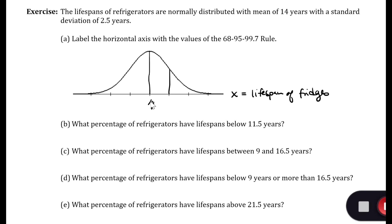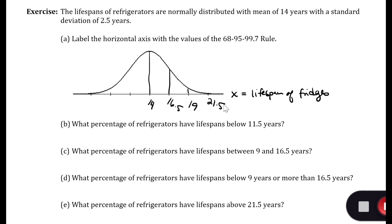One standard deviation above the mean would be 14 plus 2.5, so it'll be 16.5. Two standard deviations above the mean would be 16.5 plus 2.5, which would be 19. And then three standard deviations above the mean would be 19 plus 2.5, so it'll be 21.5.